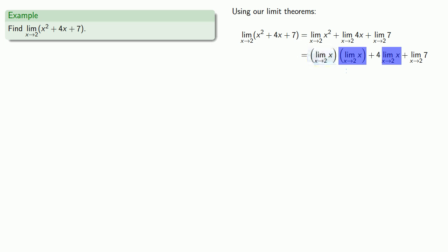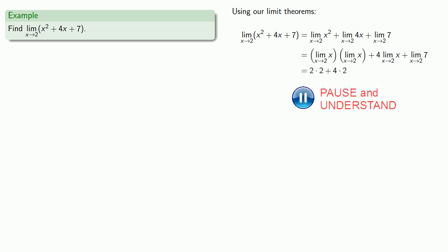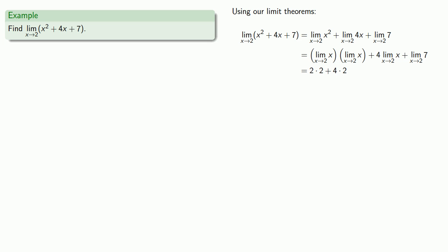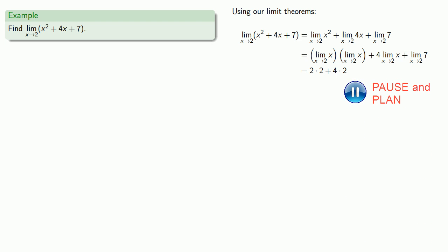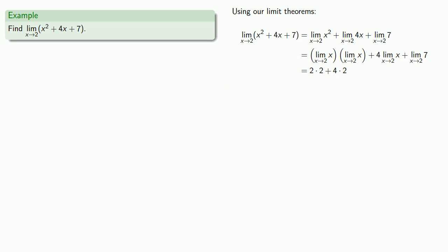We've already calculated what the limit as x approaches 2 of x is, so we can substitute that in. We also have the limit as x approaches 2 of 7. Since 7 is a constant, the limit is just going to be 7 itself.